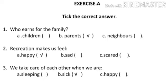Question number one: who earns for the family? Three options are given — option A: children, option B: parents, option C: neighbors. The correct answer is option B, parents. Question number two: recreation makes us feel — option A: happy, option B: sad, option C: scared. The correct answer is option A, happy.